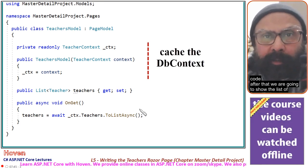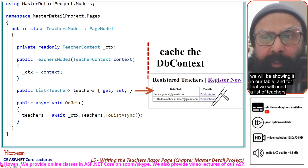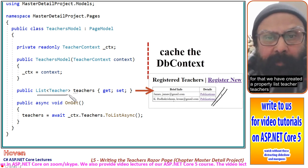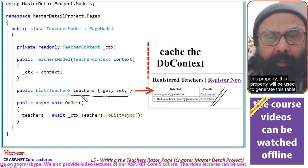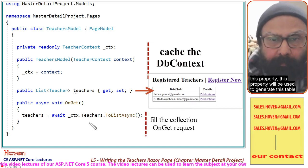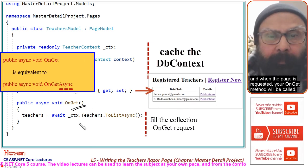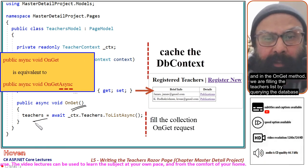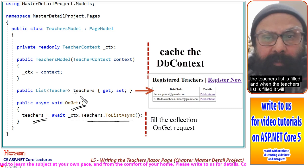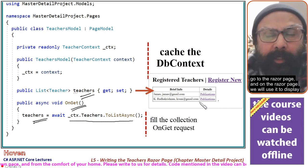After that, we are going to show the list of teachers on the razor page in a table, and for that we will need a list of teachers. We have created a property called List Teachers. This property will be used to generate the table. When the page is requested, your OnGet method will be called. In the OnGet method, we are filling the teachers list by querying the database. When the teachers list is filled, it will go to the razor page and we will use it to display all the records.